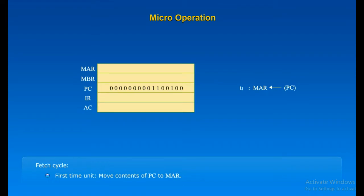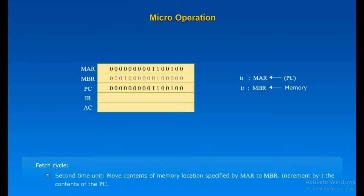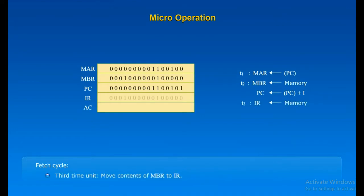Let us see the micro-operations involved in the instruction cycle. In the fetch phase: first time unit — move contents of PC to MAR. Second time unit — move contents of the memory location specified by MAR to MBR, and increment the contents of the PC by 1. Third time unit — move contents of MBR to IR.